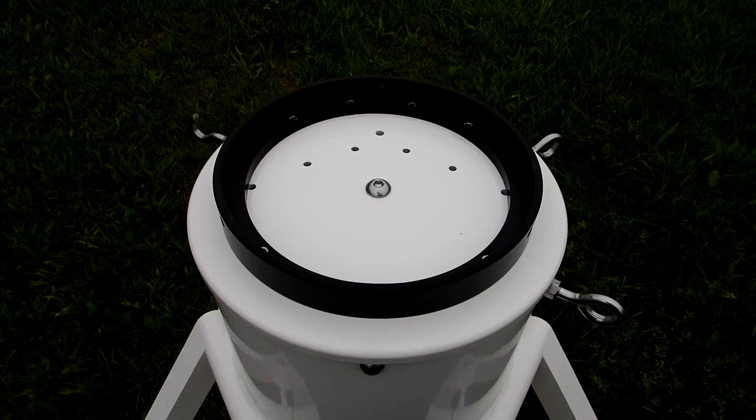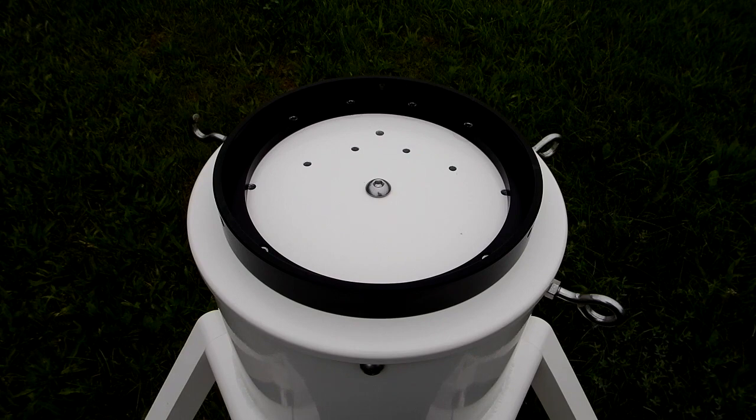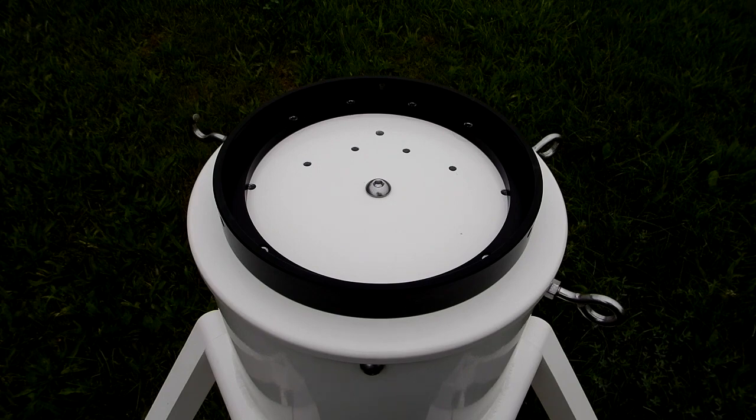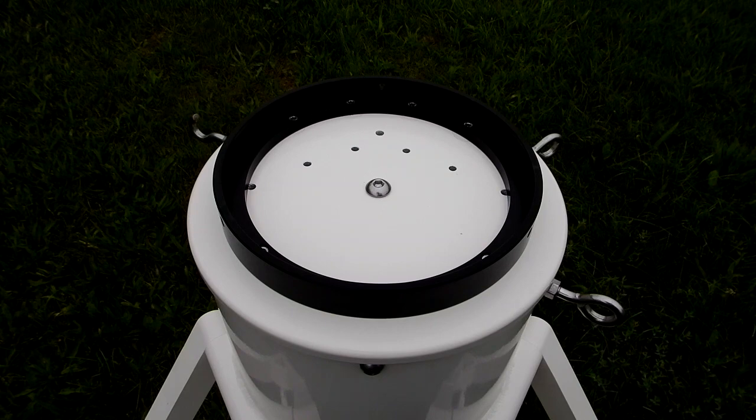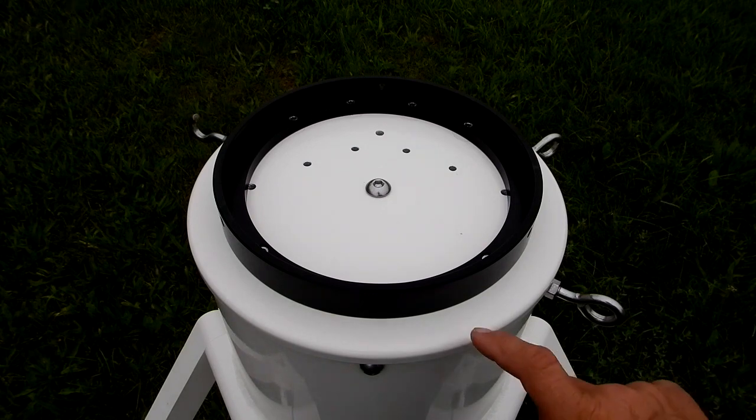Okay, so this is the top part of my 12 inch pier tripod and the flat surface adapter you see there is for the Astrophysics 1600. I also want to be able to use this with my 1100 Astrophysics mount without having to pull this adapter.